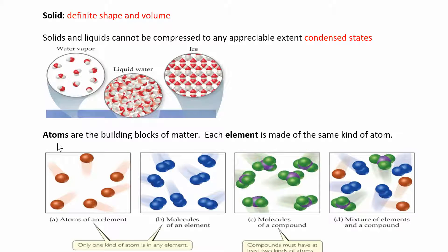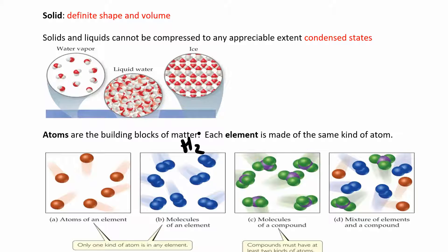Atoms are the building blocks of matter, and each element is made of the same kind of atom. Here's a picture of atoms of an element — just one singular type of atom. If you put two of them together you have a molecule. If they're the same type, this is a molecule of an element — something like H₂ or a diatomic oxygen molecule.